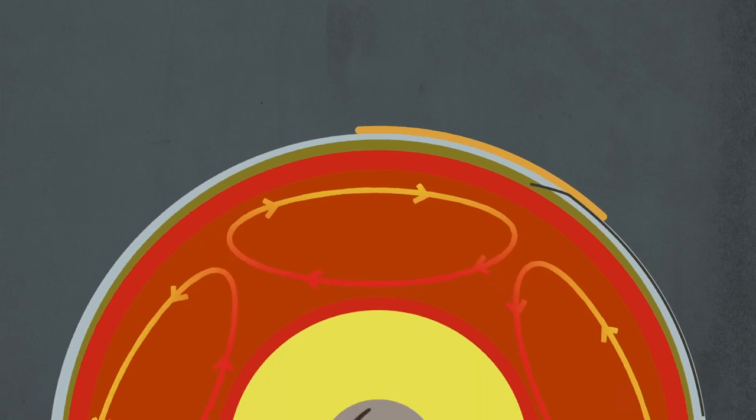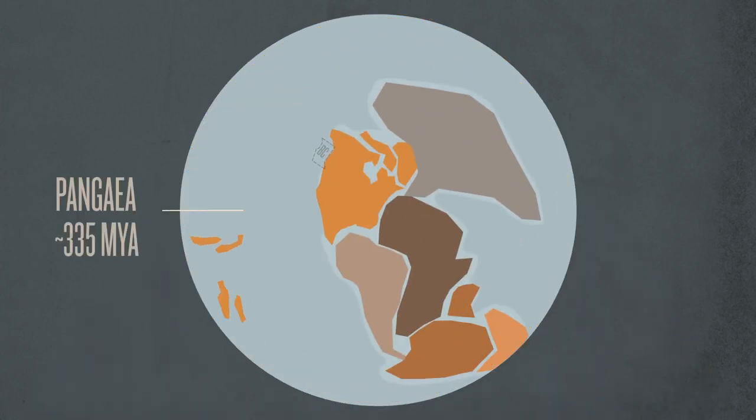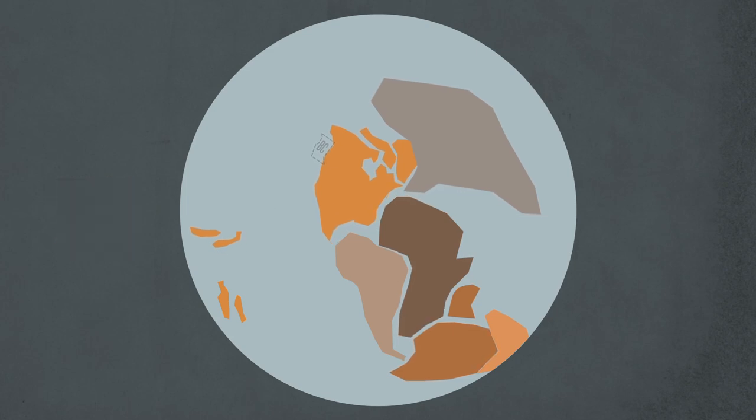Land gathered into a supercontinent called Pangaea. Then the Atlantic Ocean opened. North America split from Europe and Africa, moving west.